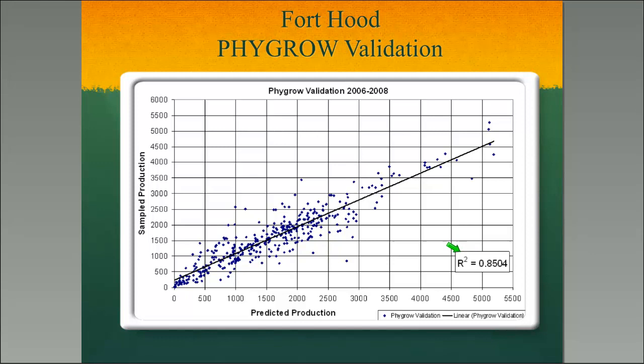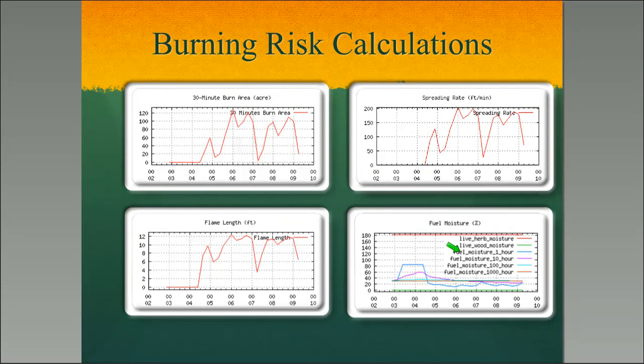Using that information from FIGRO, we have a system called BRASS — the Burning Risk Advisory Support System. It's a modified version of some Forest Service calculations. If an ignition were to occur, it gives an estimate throughout the day of the 30-minute burn area, the spreading rate, flame length, and fire line intensity. Over in the corner we have our estimate of fuel moisture that's come out of FIGRO. Nothing like this is going to be 100%, but it gives you a good idea — especially when you're dealing with a system that burns a lot and has a lot of potential for ignition.